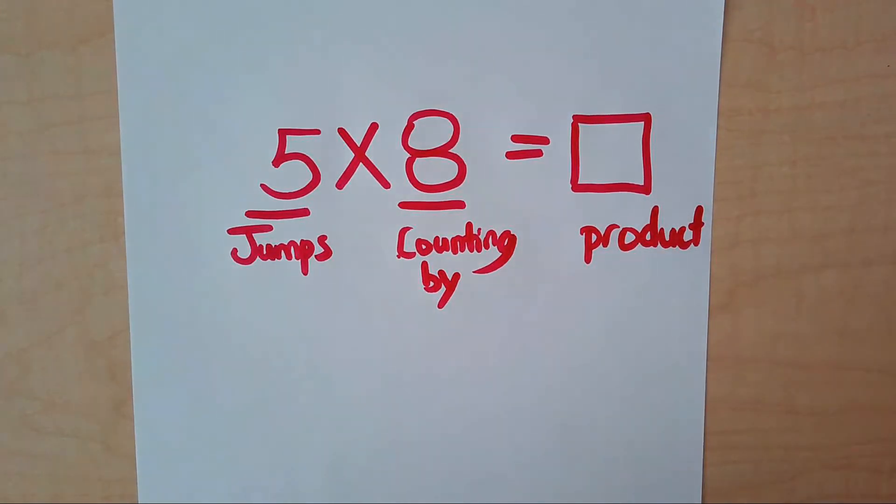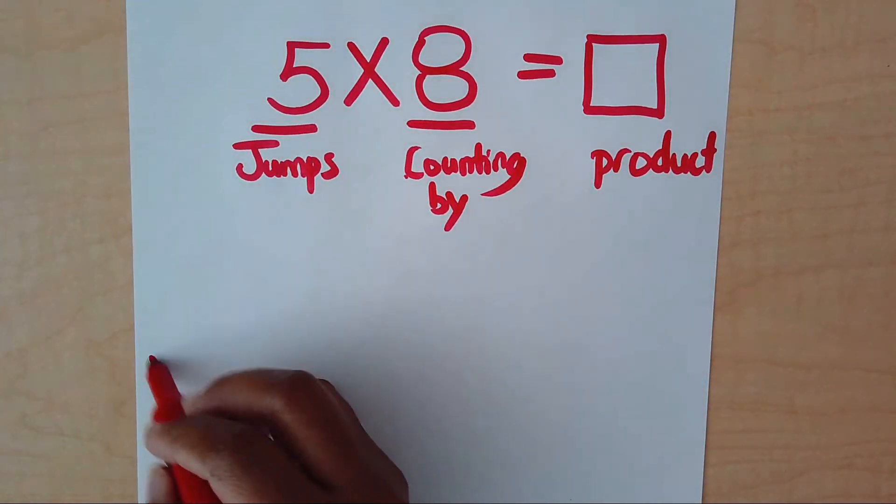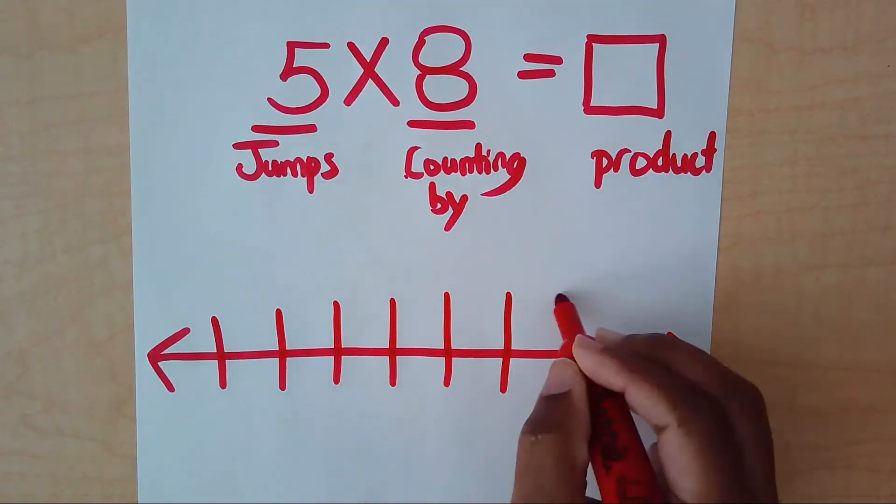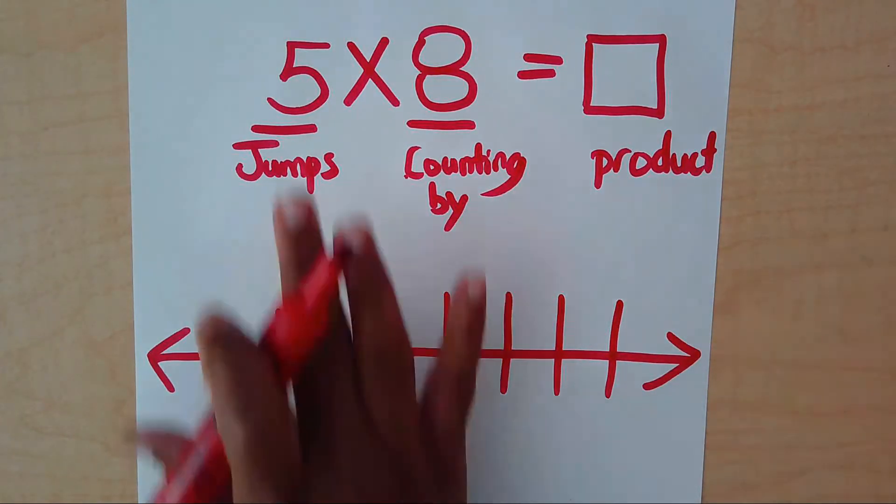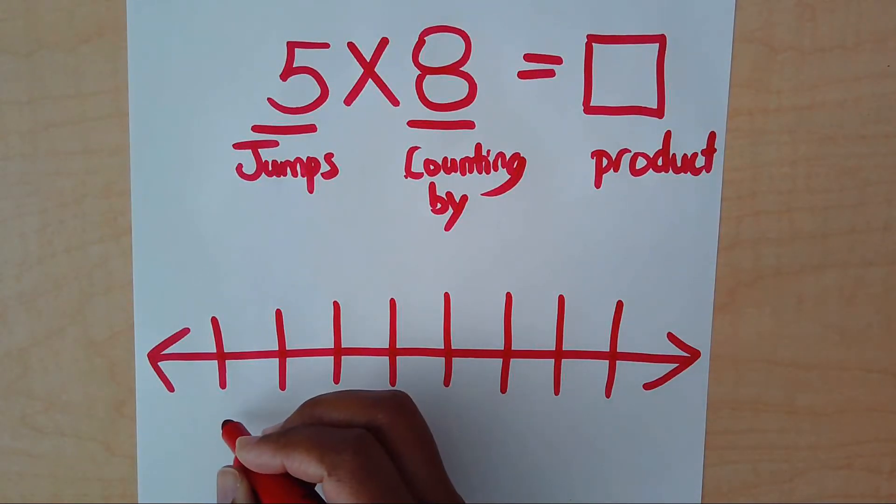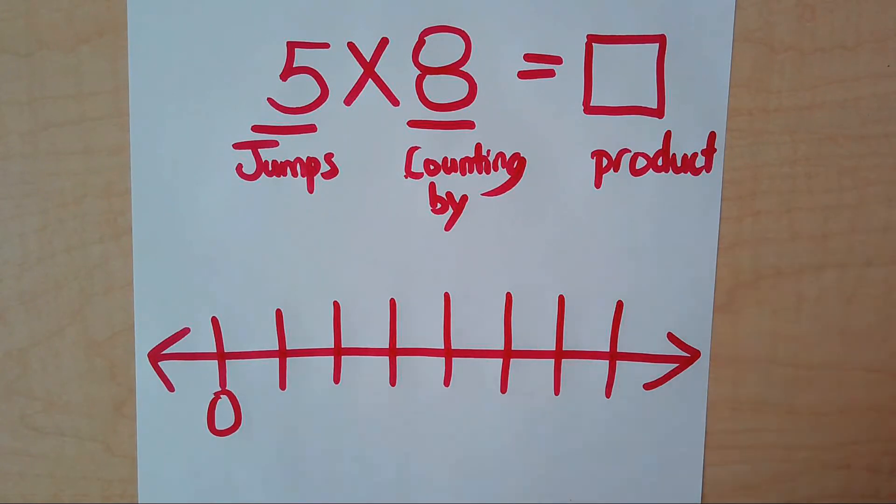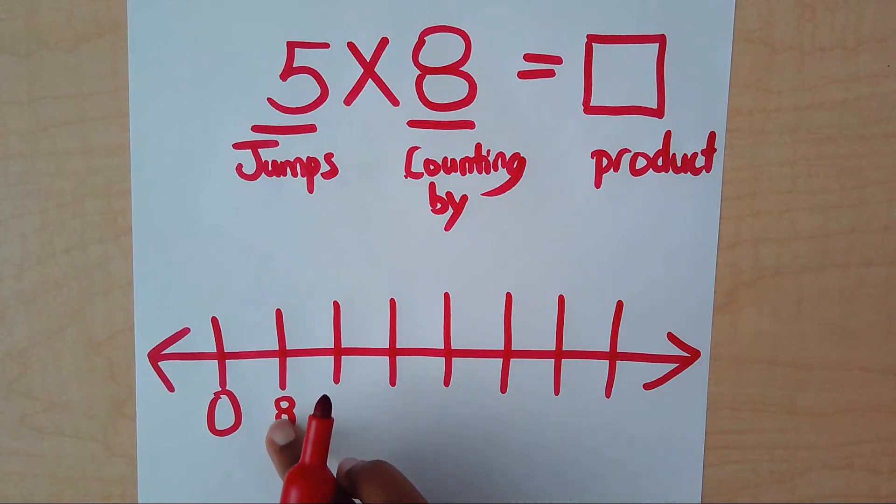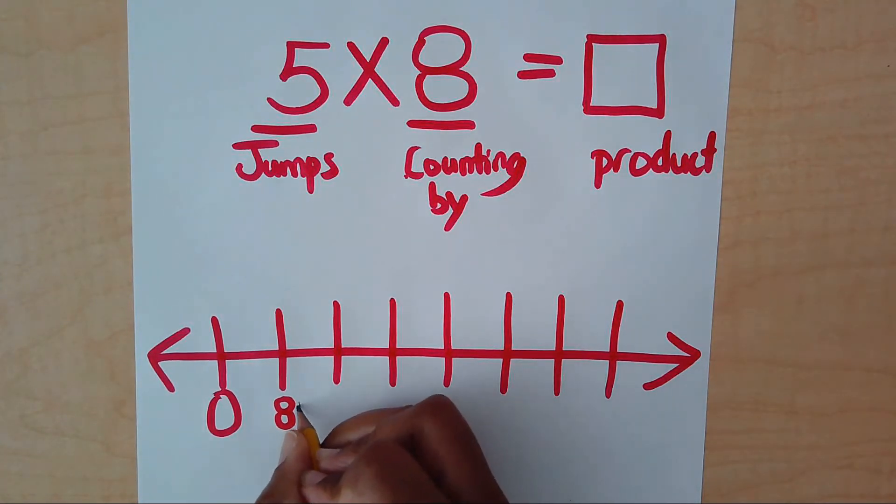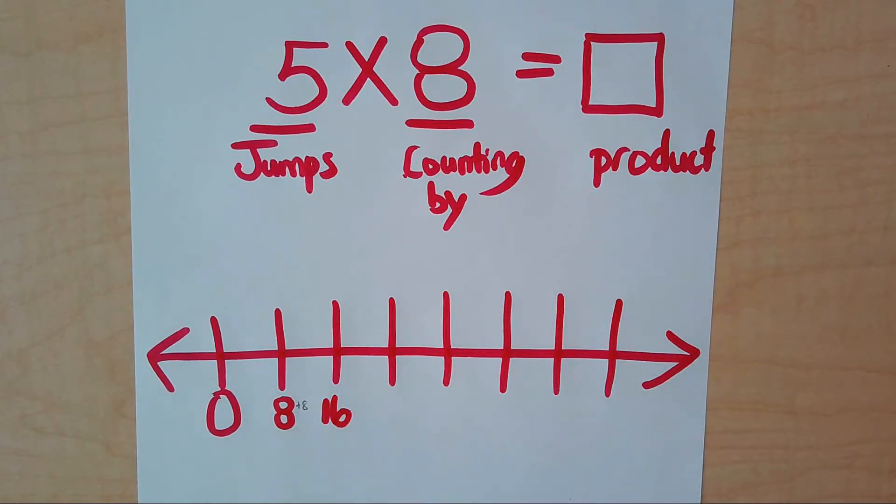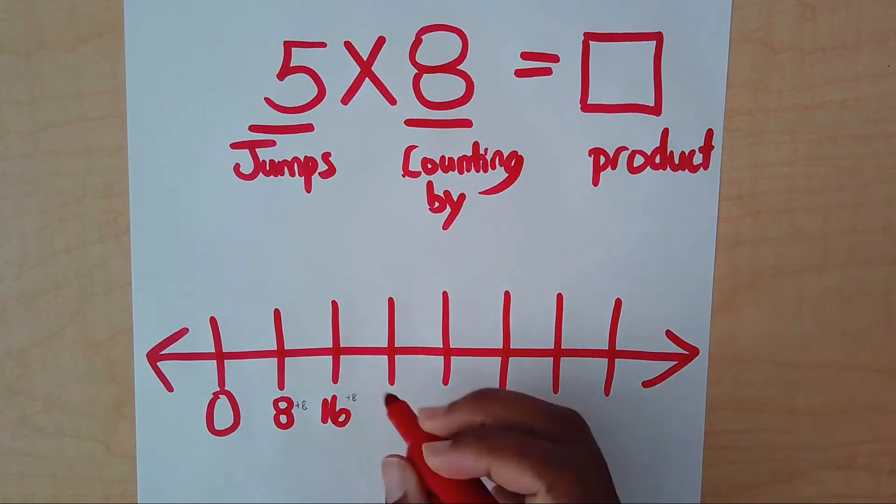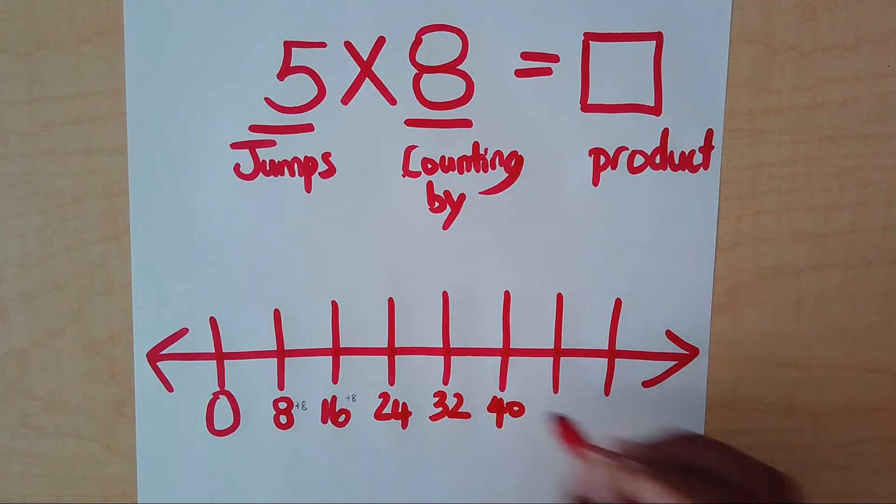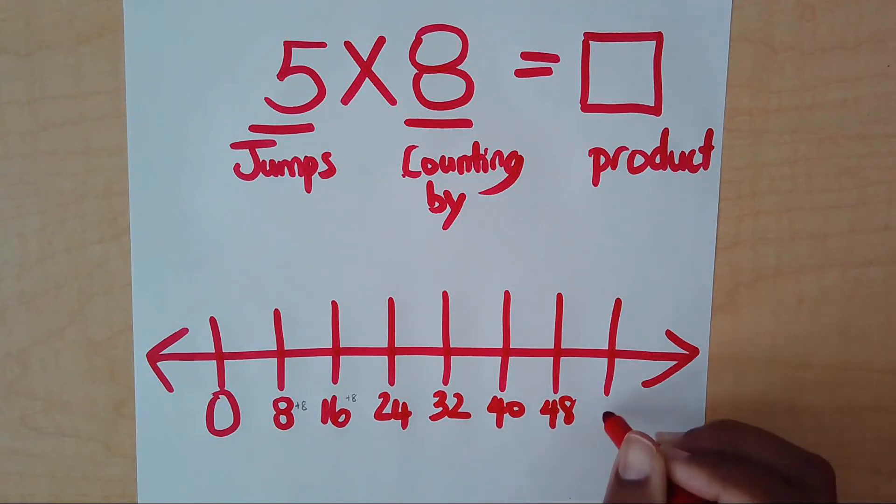So now we can start drawing the number line. This number line requires five jumps. So make sure you have more than five lines. I think this should be able to do the job of getting five jumps. So what does every number line start with? I hope you said zero. So we have our zero. Then we are counting by eights. So right away we put eight. Then eight plus eight, because every number we are going to add eight. So eight plus eight is 16. 16 plus eight is 24. And we will continue with that. 24 plus eight is 32. 32 plus eight is 40. 40 plus eight is 48. And 48 plus eight is 56.